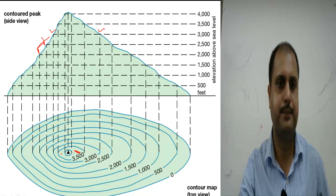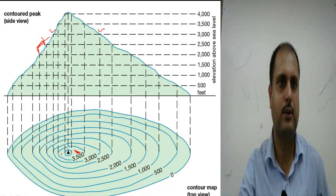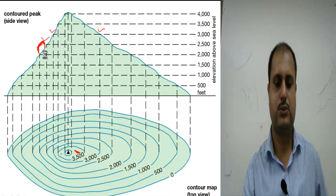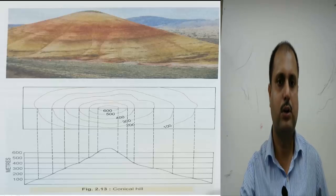At the top of the mountain, this is called the vertical interval, and here it is called the horizontal interval. The vertical interval refers to the height difference shown on the image of the mountain.